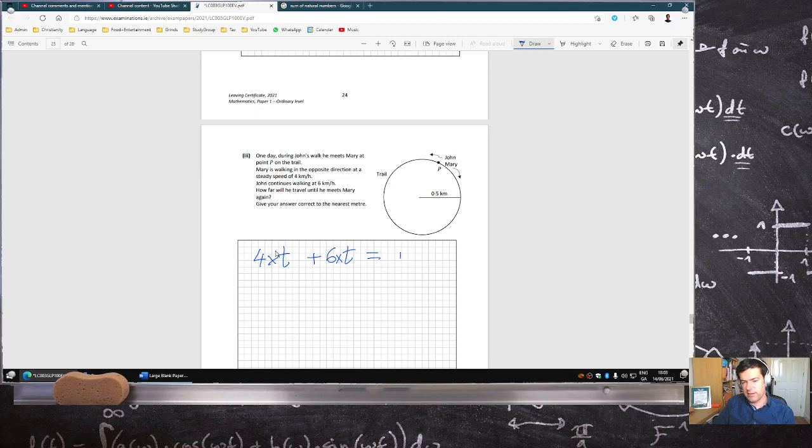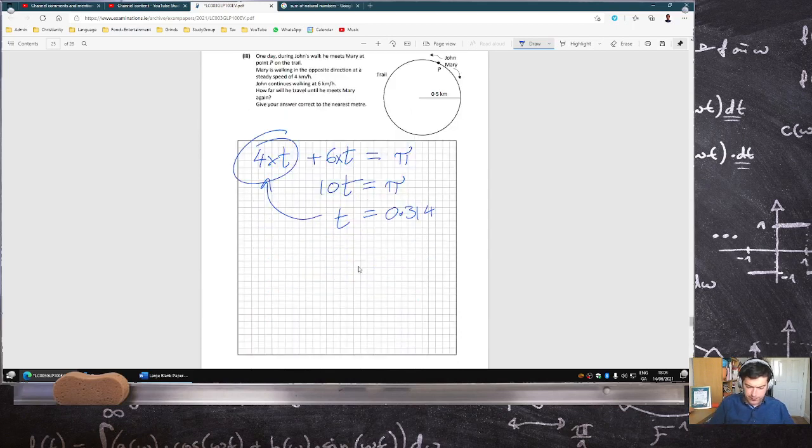2 times pi, so that means 10 t is pi, so the time is 0.314. But how far will John travel? And that's in kilometers, so they want the nearest meter, that would be 1,257 meters.